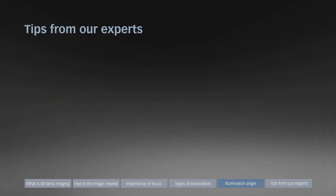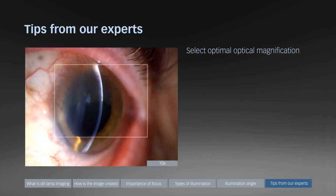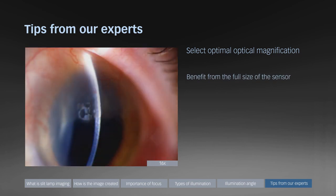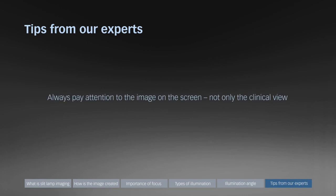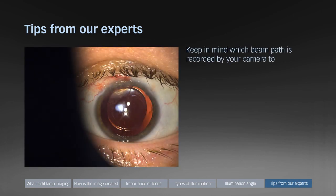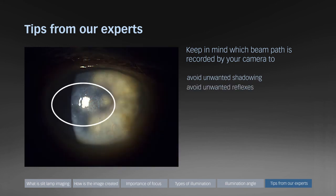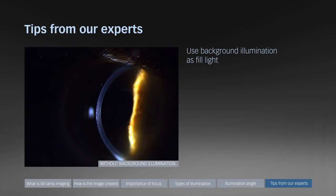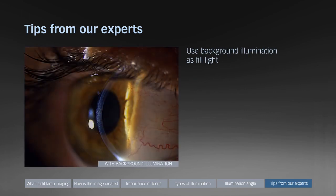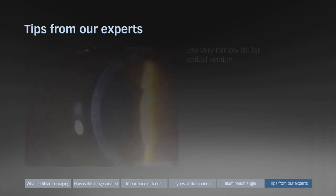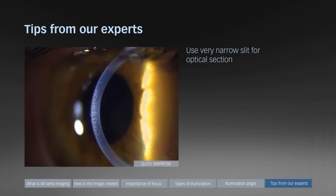This last section provides general imaging tips from our experts. First, select optimal optical magnification so you benefit from the full size of the camera sensor. Always pay attention to the image on the screen, not only the clinical view. Keep in mind which beam path is recorded by your camera to avoid unwanted shadowing and reflections. Add background illumination to improve orientation within the image. Use very narrow slit illumination with maximum slit intensity for optical sections, otherwise you will lose detail.